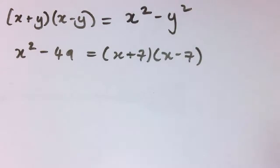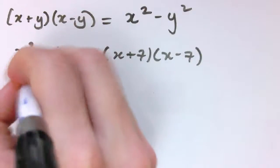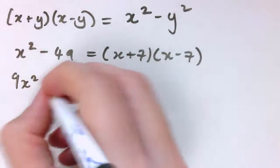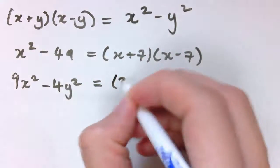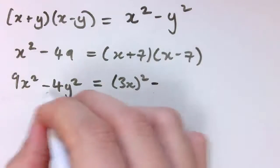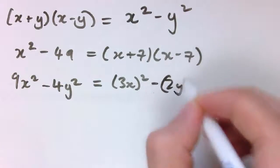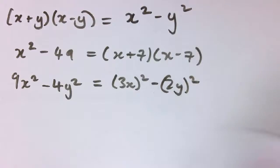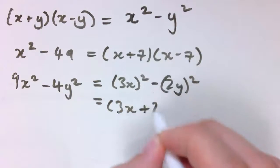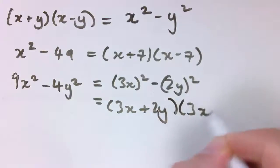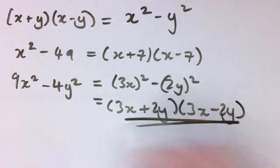We could do it with more complex sort of square forms as well. So something like 9x squared minus 4y squared. Now notice that 9x squared, well that's 3x all squared and 4y squared, that's 2y all squared. So this we could factorize as 3x plus 2y times 3x minus 2y.